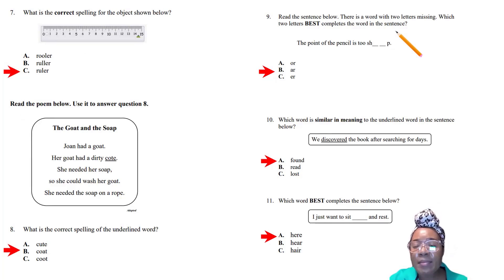Question nine: Read the sentence below. There's a word with two letters missing. Which two letters best complete the word? The sentence is 'Now the point of the pencil is too sharp.' You can try each answer: S-H-O-R-P, no. S-H-A-R-P, sharp, correct. That's how you test different options when you're not certain.